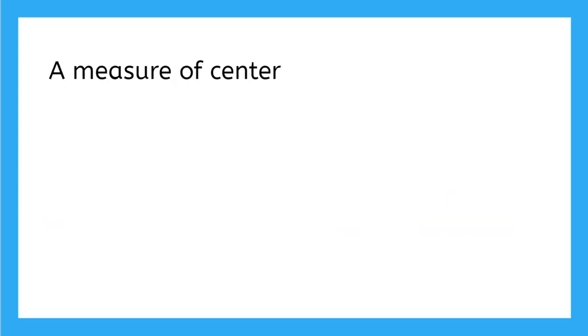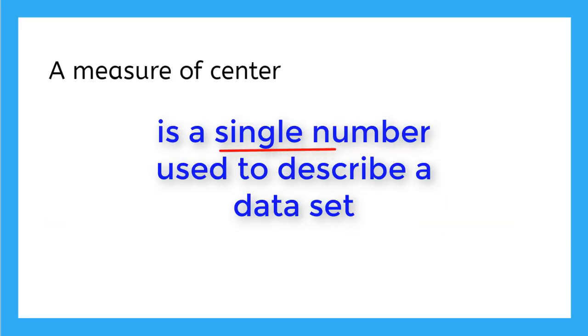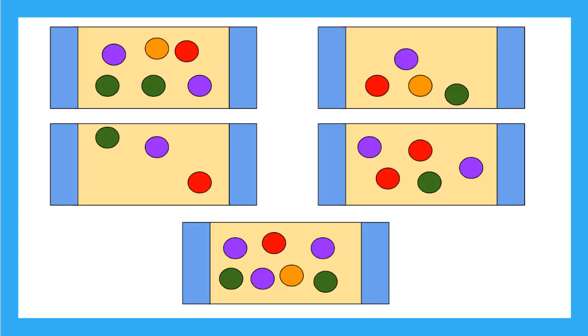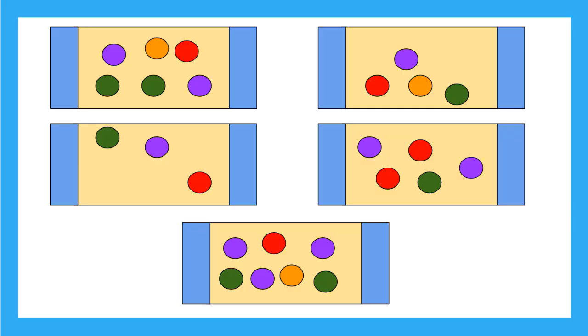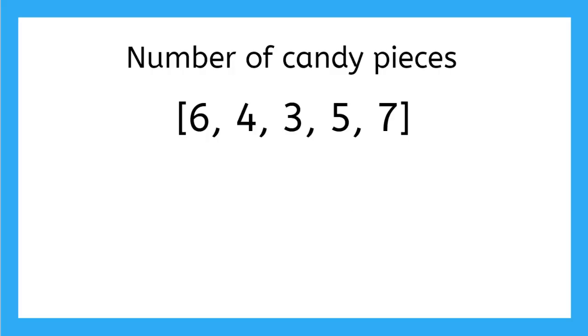A measure of center is a single number used to describe a set of data. For example, let's say we have five bags of candy, but the bags don't have the same number of candy pieces in each bag. We want to know how many pieces of candy come in a bag. If we count the pieces in each bag, our data will look like six, four, three, five, and seven.